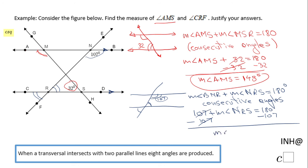How can I find CRF now? If you take a look, these two angles are what we call vertical angles, so they are congruent. I'm going to write that statement here: angle CRF is congruent to angle NRS. The justification is vertical angles.